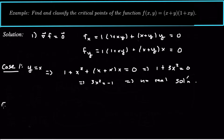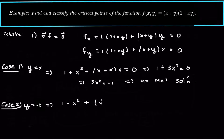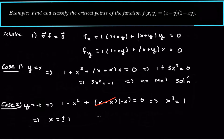So the case we need to focus on is case two: y equals negative x. Plugging that into the first equation gives 1 minus x squared plus x minus x times negative x equals zero. The last two terms cancel to zero, so we get 1 minus x squared equals zero, or x squared equals 1, giving x equals plus or minus 1. If x equals 1 then y equals negative 1, and if x equals negative 1 then y equals positive 1. So those are our two critical points.